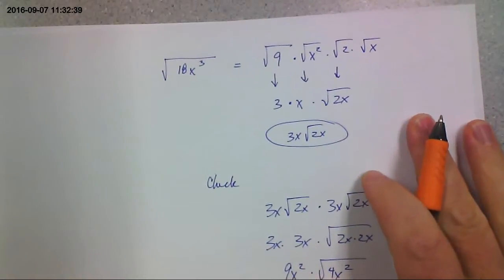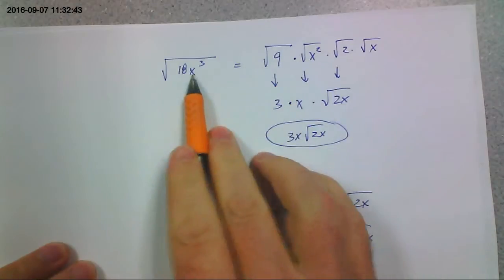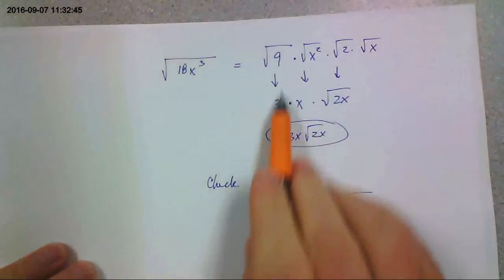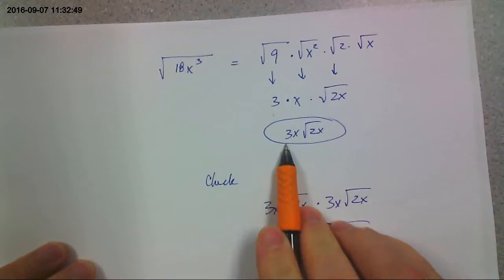Square root of 18x cubed. You factor 18 into 9 times 2. x cubed is x squared times x. Square root of 9 is 3. Square root of x squared is x. And you're left with this. So that would be your answer.